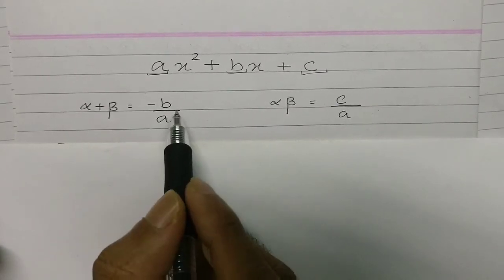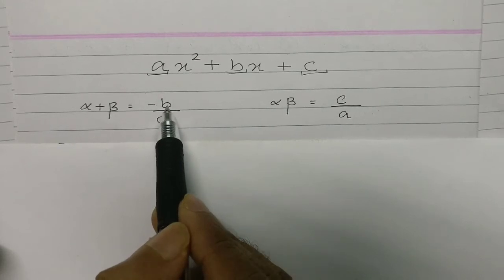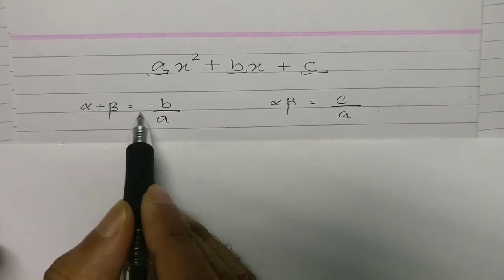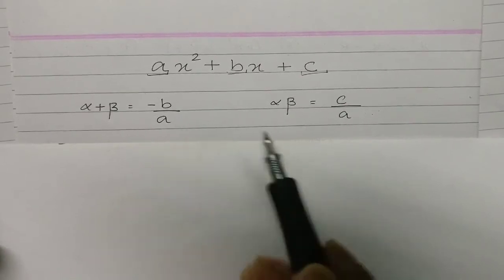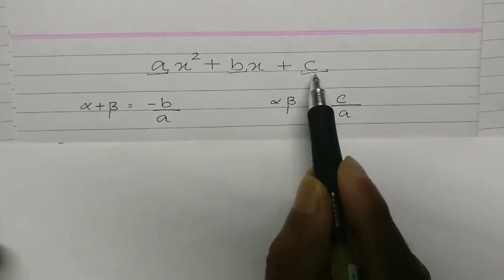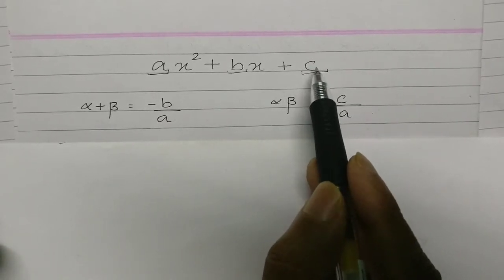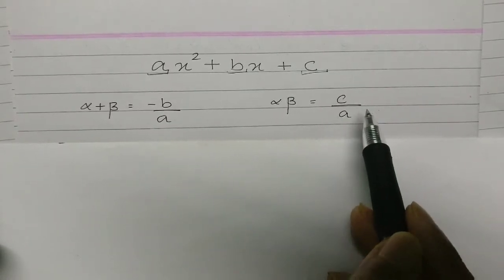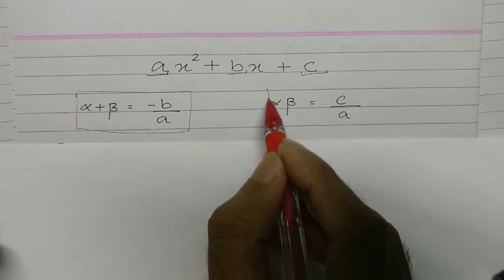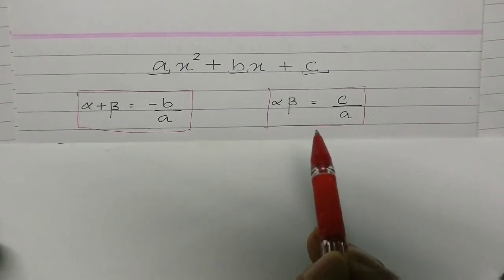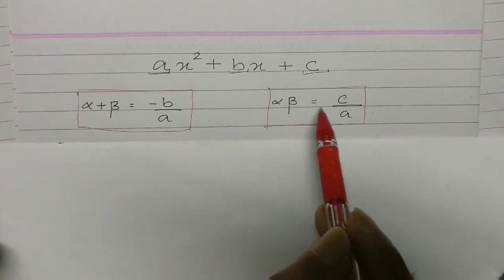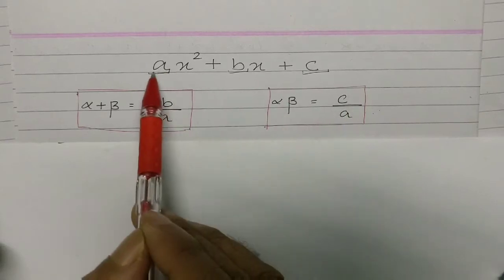The relationship is: if you add those two zeros, alpha plus beta, it equals negative B upon A. This is called the sum of zeros: sum of zeros = −B/A. And the product of zeros — alpha times beta — equals C upon A. It is very important that you learn these two formulas clearly. You should know them even if someone asks you in your sleep: sum of zeros, alpha + beta = −B/A; product of zeros, alpha × beta = C/A. These come from the general equation.